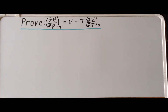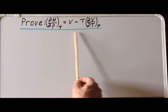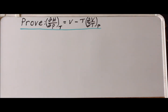Hello. In this video, we are going to prove the following relationship, which involves the partial derivative of the enthalpy with respect to pressure at constant temperature. And then we are going to use this expression to evaluate this quantity for an ideal gas and then for a non-interacting van der Waals gas.